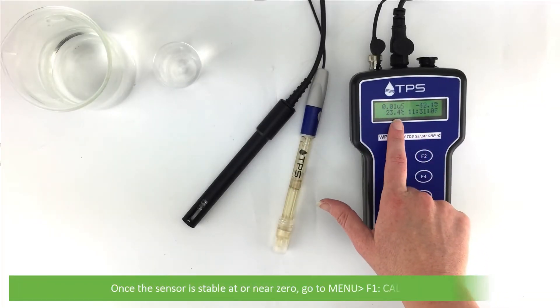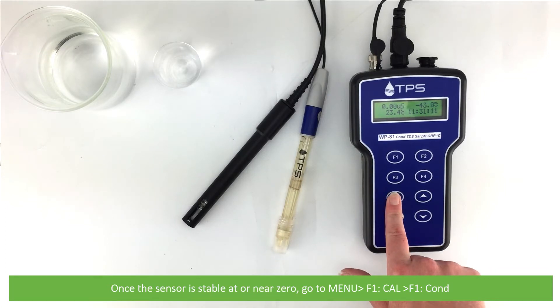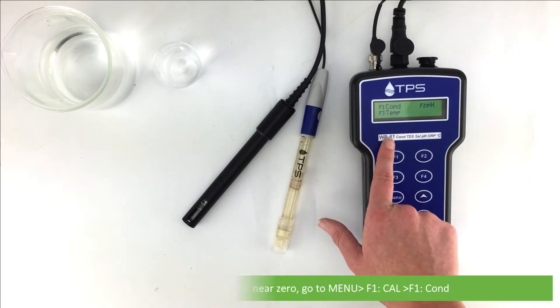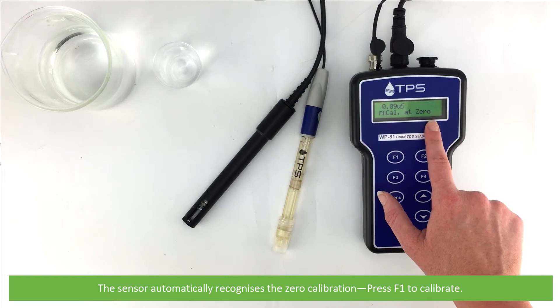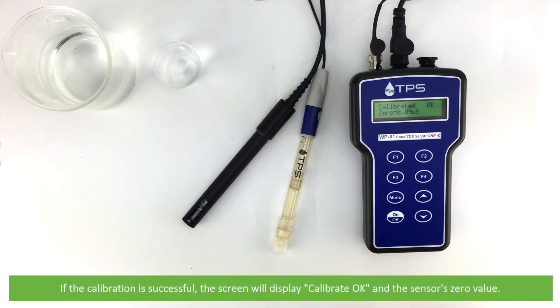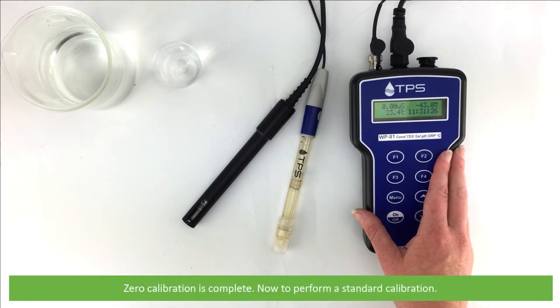Once the sensor is stable at or near zero, go to menu, F1 cal, then F1 C-O-N-D. The sensor automatically recognizes the zero calibration. Press F1 to calibrate. If the calibration is successful, the screen will display calibrate OK and the sensor's zero value. Zero calibration is complete.